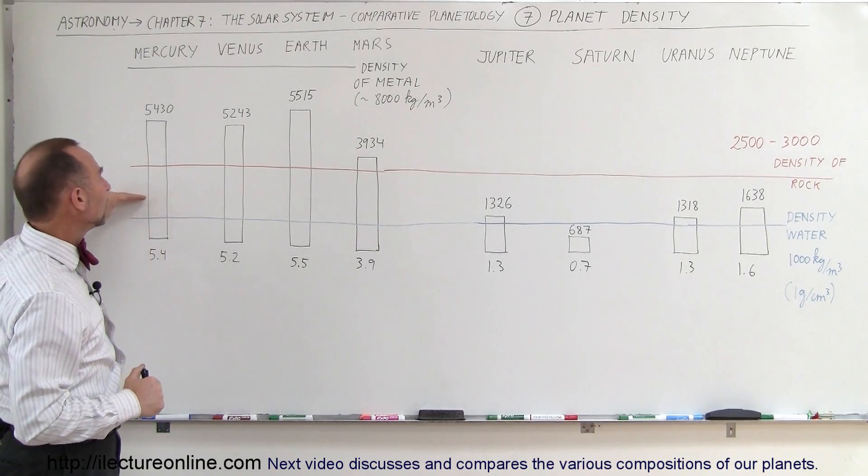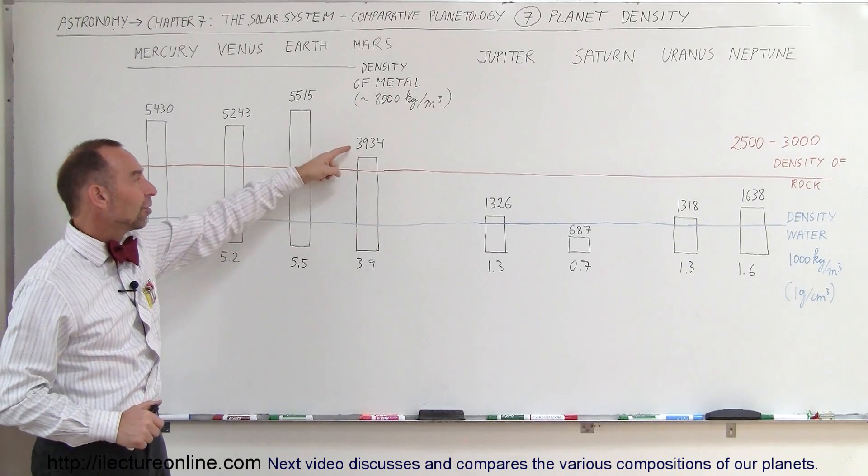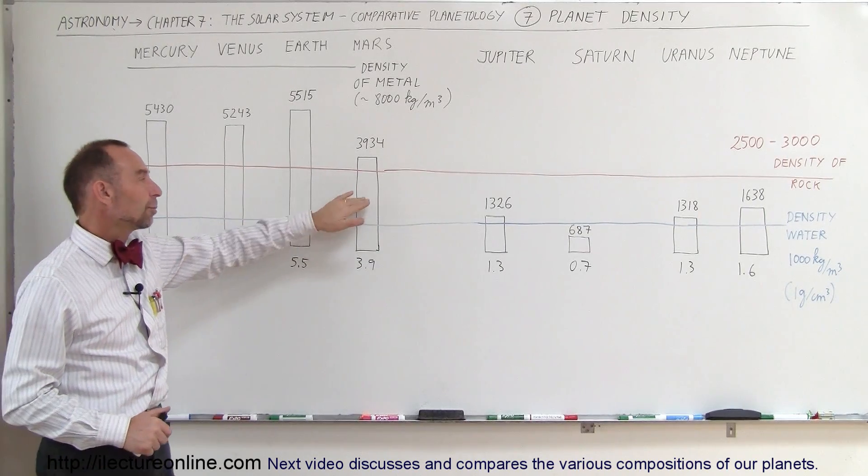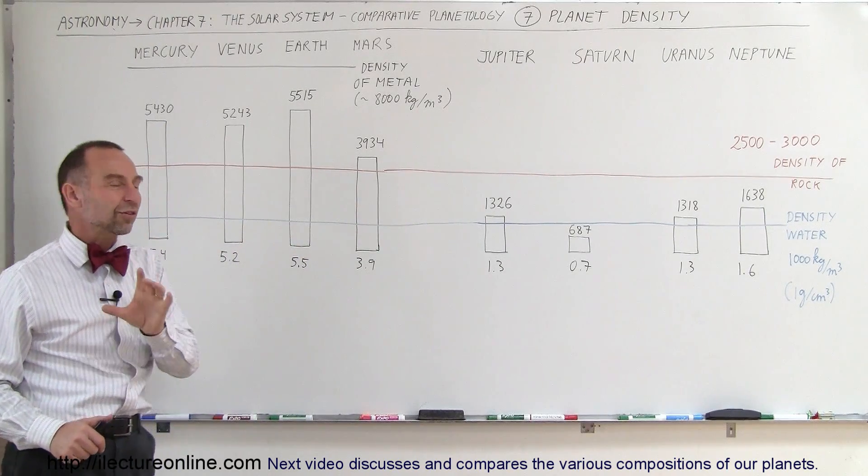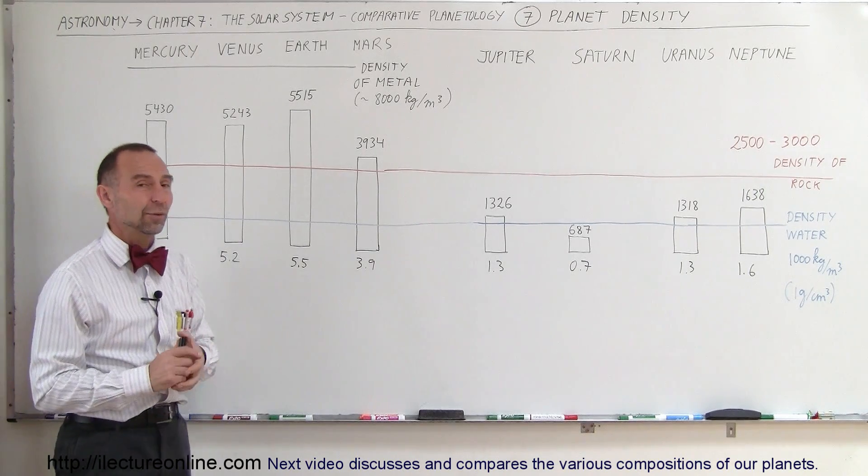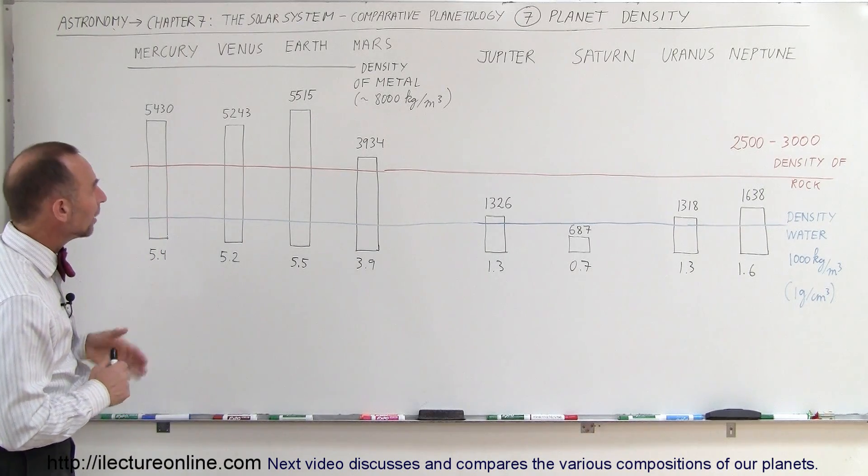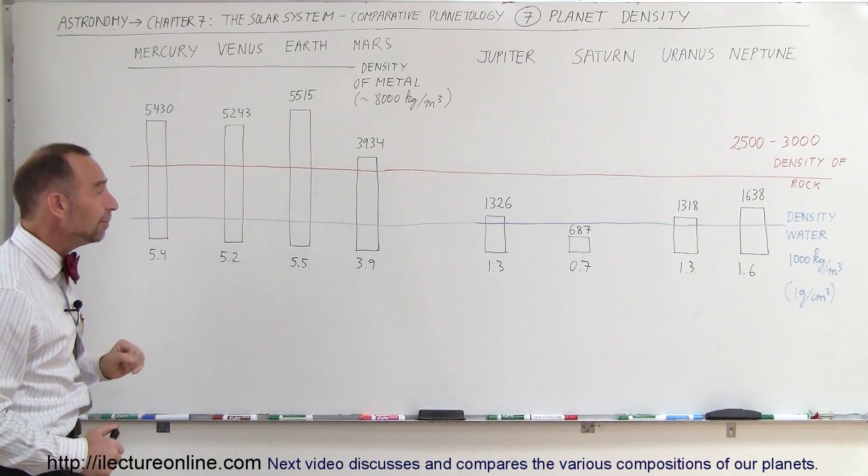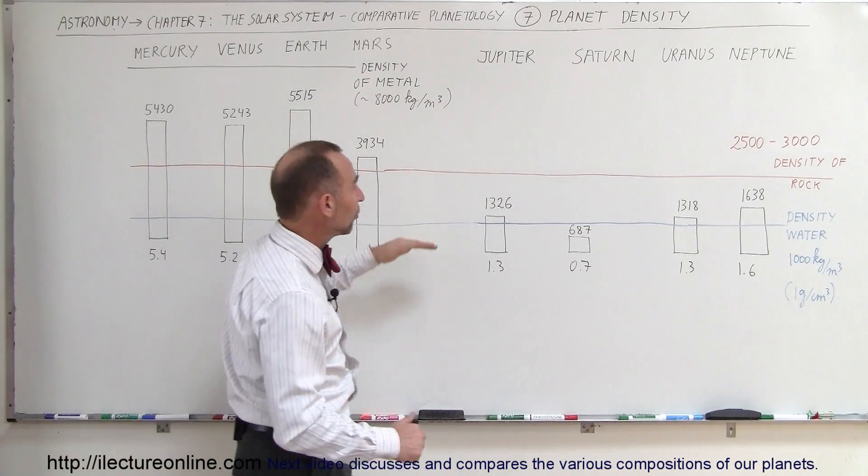So you can see though that since Mars has a lower density than these other three planets you can surmise that Mars probably has the lowest percentage of metal and that's about right. I think Mars is about 30% metal and about 70% rock. Okay so you can see that there's a remarkable difference. Interestingly enough Earth is the most dense planet of all of them. And now we can come to the gas planets.